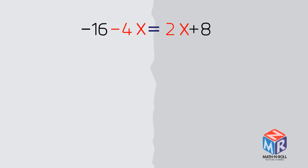Let's try another example: negative 16 minus 4x equals 2x plus 8. We have variables on both sides. To solve, we need to collect all of the variable terms on one side and all constant terms on the other side. First, choose the side for variable terms. As I've said before, it doesn't matter. However, the easiest way is to pick the side with the greater coefficient of variable terms, to avoid getting negative coefficients.